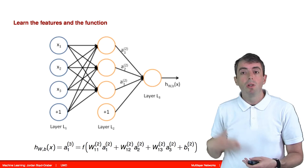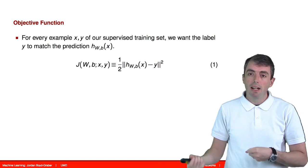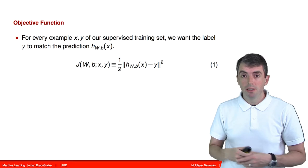In a standard regression setup, we want to minimize the error between the final prediction for an example and the label.